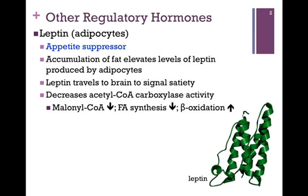The first we'll consider is leptin. The structure of leptin is illustrated in a ribbon diagram on the lower right of the screen. As you can see, it's primarily alpha helical and rather small in size. It was first identified as an appetite suppressor. The accumulation of fat within the adipocytes causes them to produce higher levels of leptin, which then travels to the brain to signal satiety and suppress our appetites.